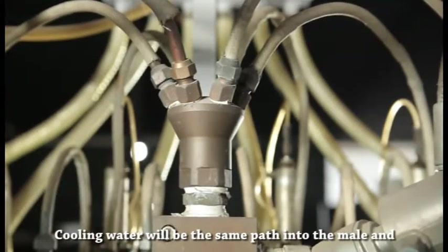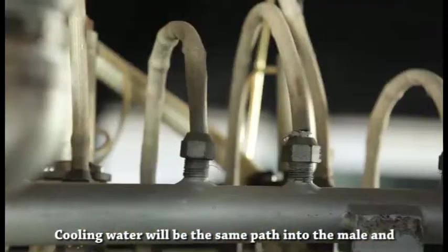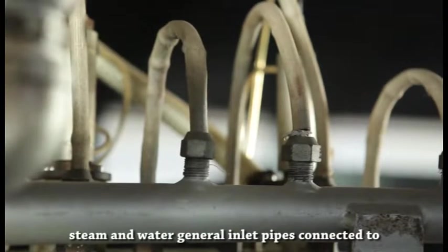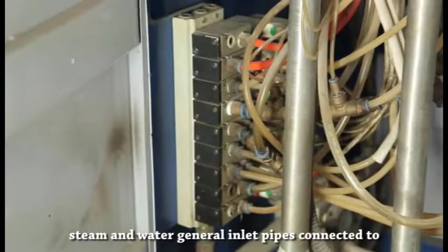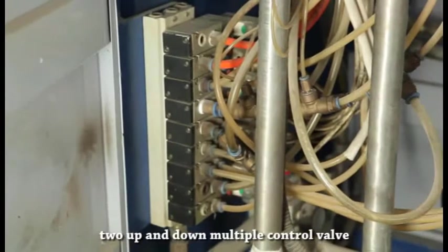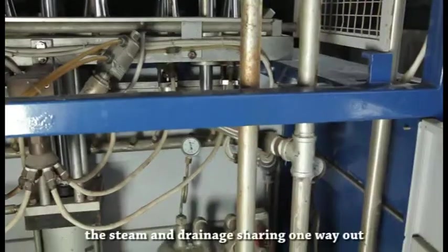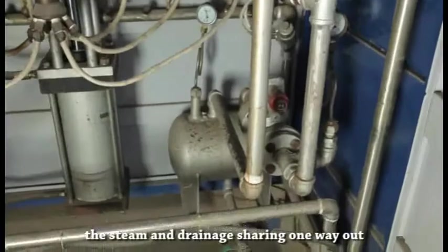Cooling water follows the same path into the male and female molds. Steam and water general inlet pipes connect to two up-and-down multiple control valves. The steam and drainage share one way out.